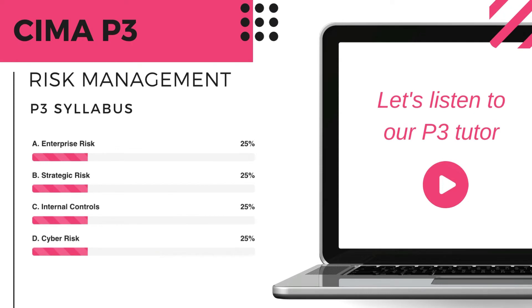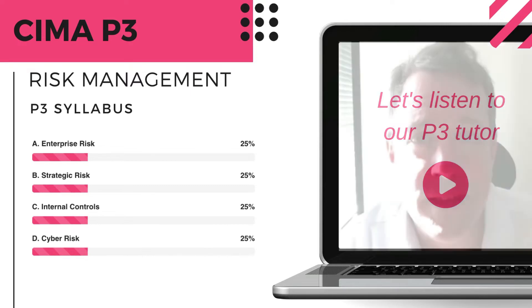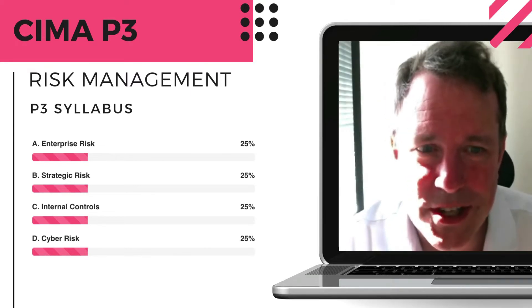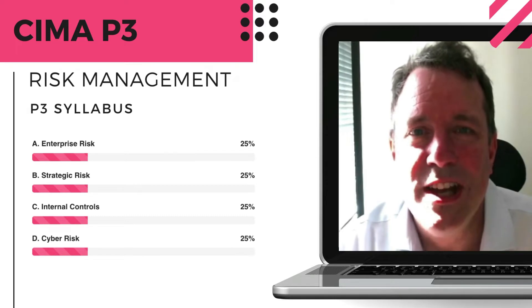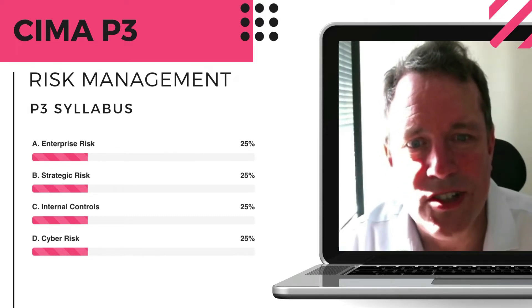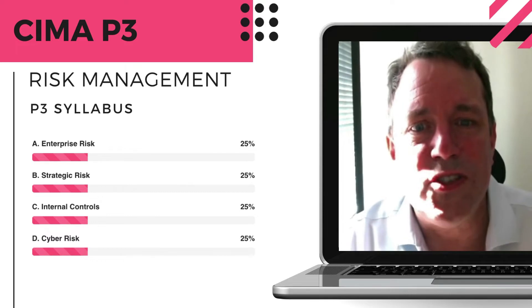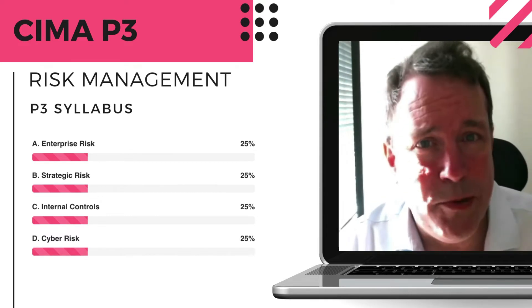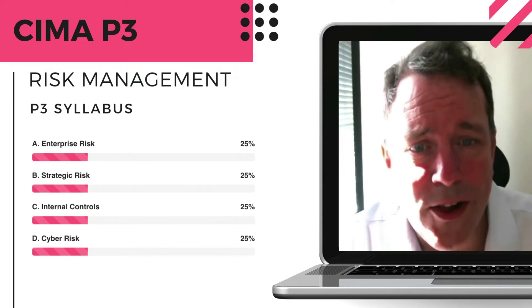Our expert Pete will give you more insight into the P3 exam from a higher level. Paper P3 is the slightly more pessimistic paper. It considers what might go wrong while we're executing our strategy and how we can stop those kinds of things from happening. It covers risk management best practice, but it also covers some numbers as well.